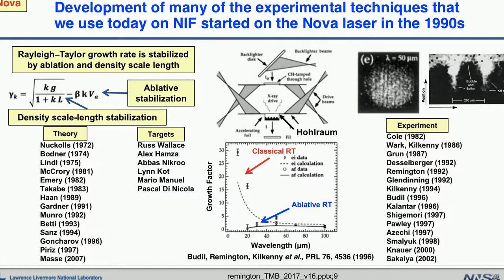Going back a few years, how do we make these measurements? The measurements have been under development for several decades. Going back to the NOVA laser, we were measuring perturbations growing on planar samples as a function of wavelength in an x-ray environment. At Livermore, we used the indirect drive approach, which takes the large lasers inside a cylindrical gold hohlraum — just a cavity — they convert to x-rays, and the soft x-rays then drive the physics experiment. We plot the growth factor versus wavelength for pre-imposed ripples on a planar sample. That methodology was worked out in the late 1980s and early 1990s.